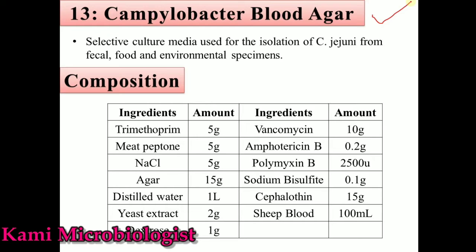Campylobacter blood agar medium is a medium which is specially used for the isolation of Campylobacter jejuni. We can say it is a selective medium and we can easily isolate Campylobacter bacteria from feces as well as from food and other environmental samples.